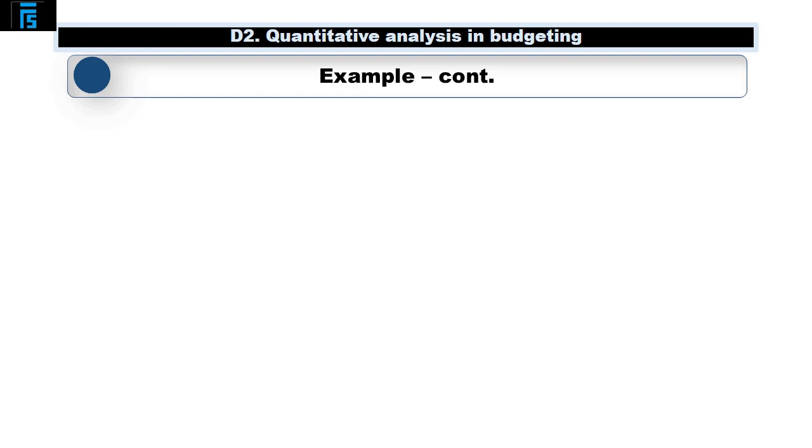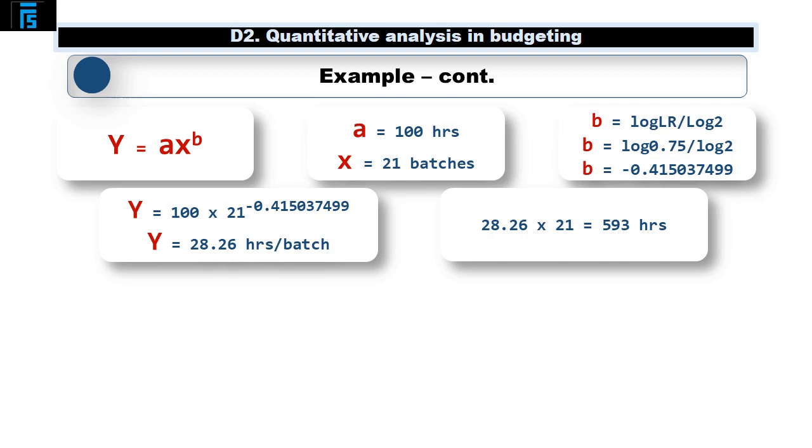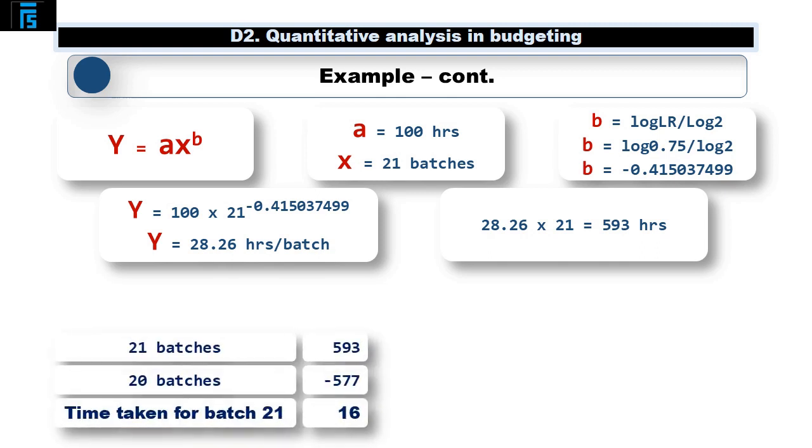To then work out the length of time taken to make batch 21, the first thing we need to do is work out how long it takes to make 20 batches, using the same basic formula as above. The only change being that x is now 20 rather than 21. So this time, Y will equal 100 × 20^(-0.415037499), giving a cumulative average time per batch of 28.84 hours and a total time of 577 hours. The difference between this and the 593 hours taken to make 21 batches is the time taken for the 21st batch, 16 hours, a massive drop from the initial 100 hours for the first batch. This 16 hour budgeted production time can be applied to any budgets from batch 21 onwards.